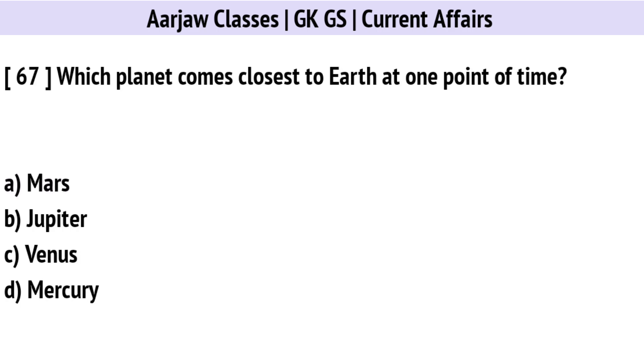Which planet comes closest to Earth at one point in time? Correct option is C: Venus.